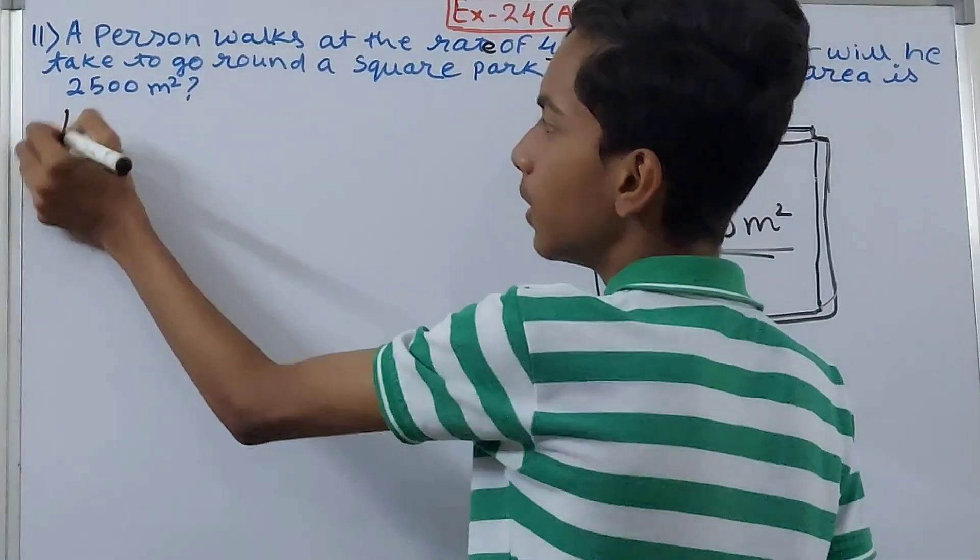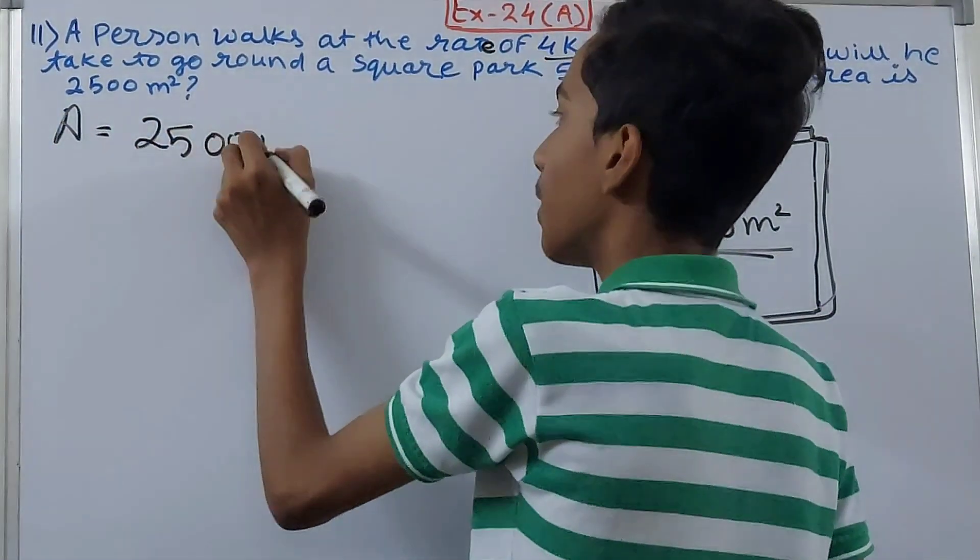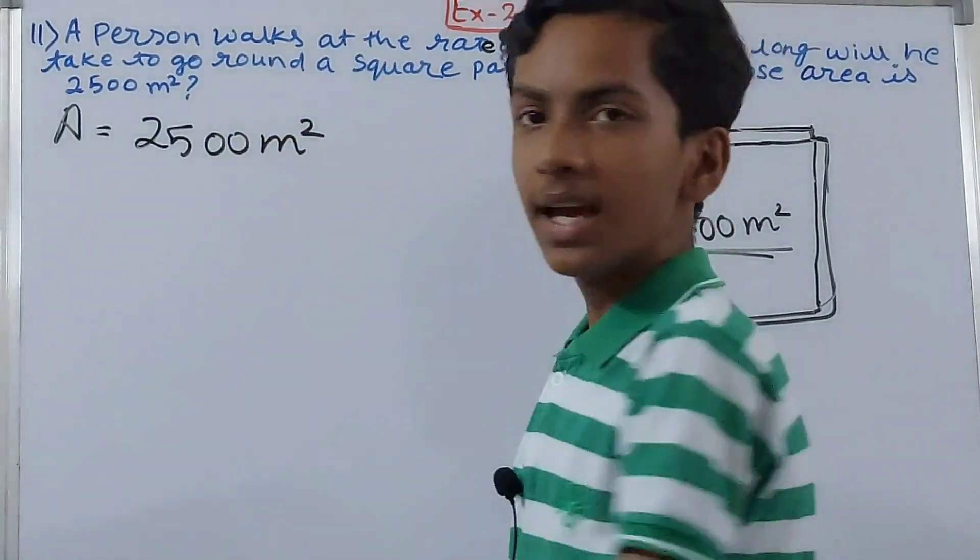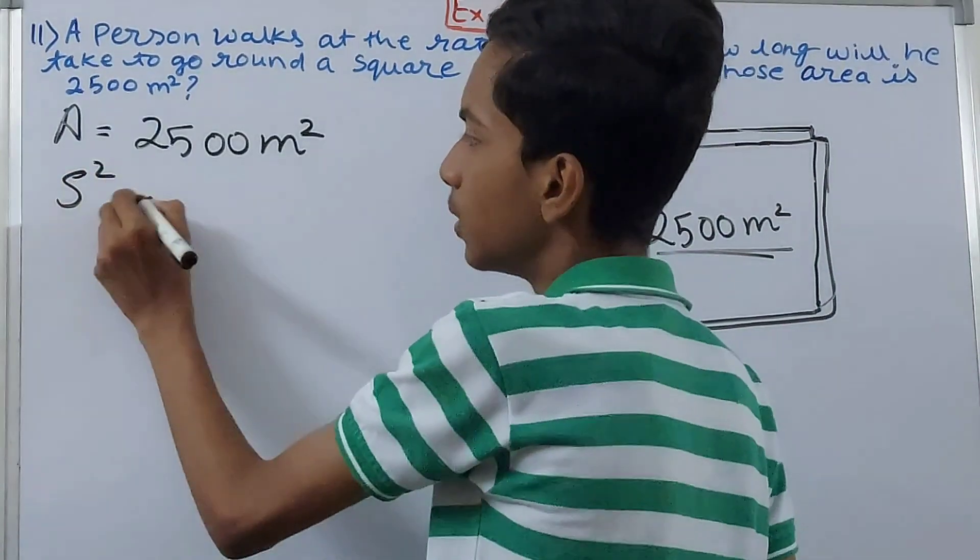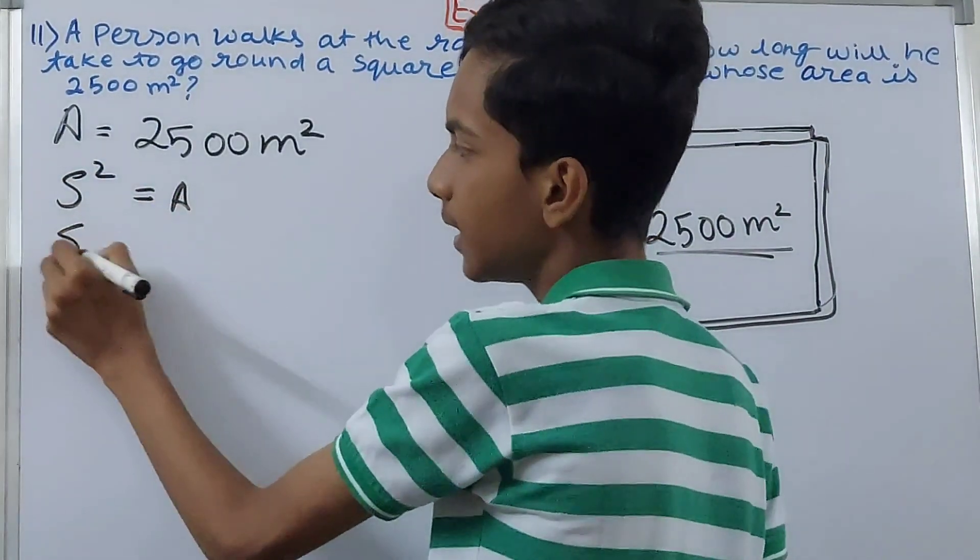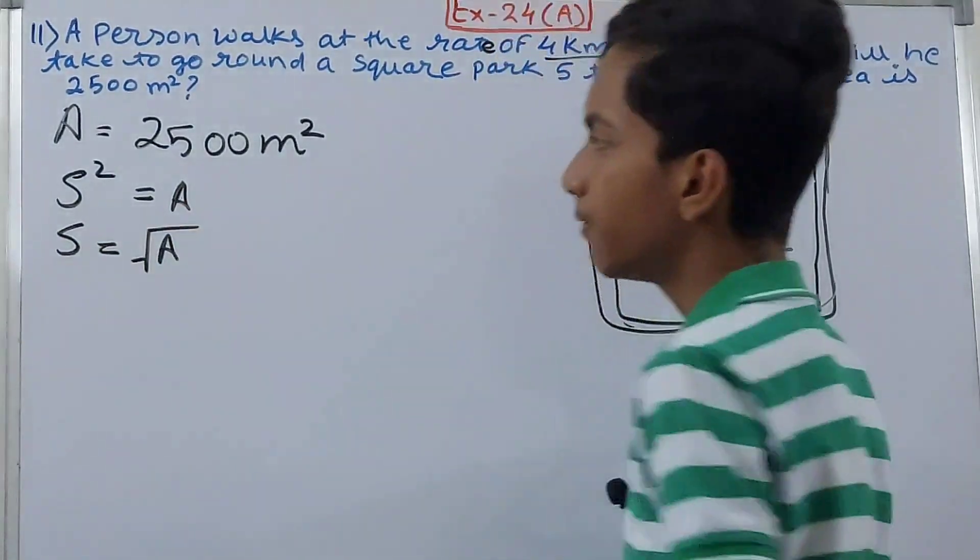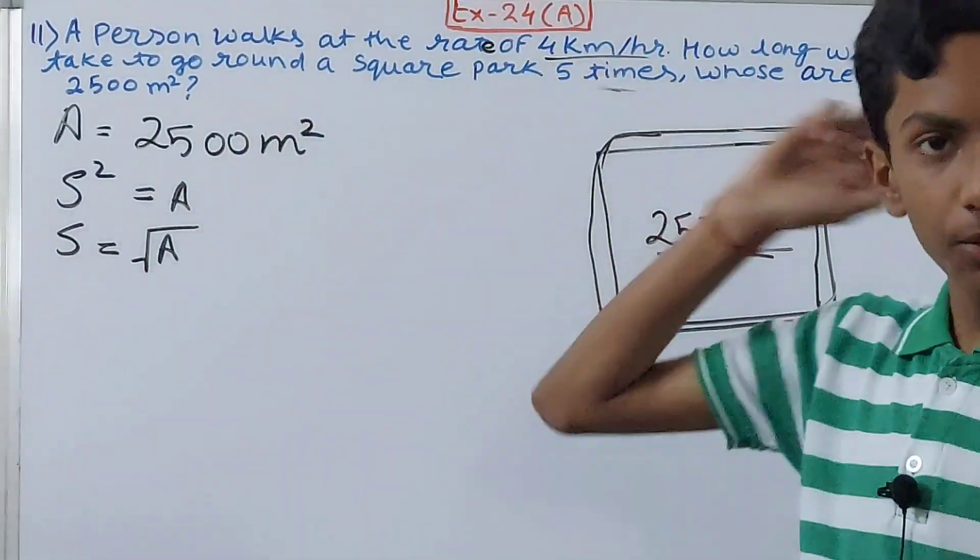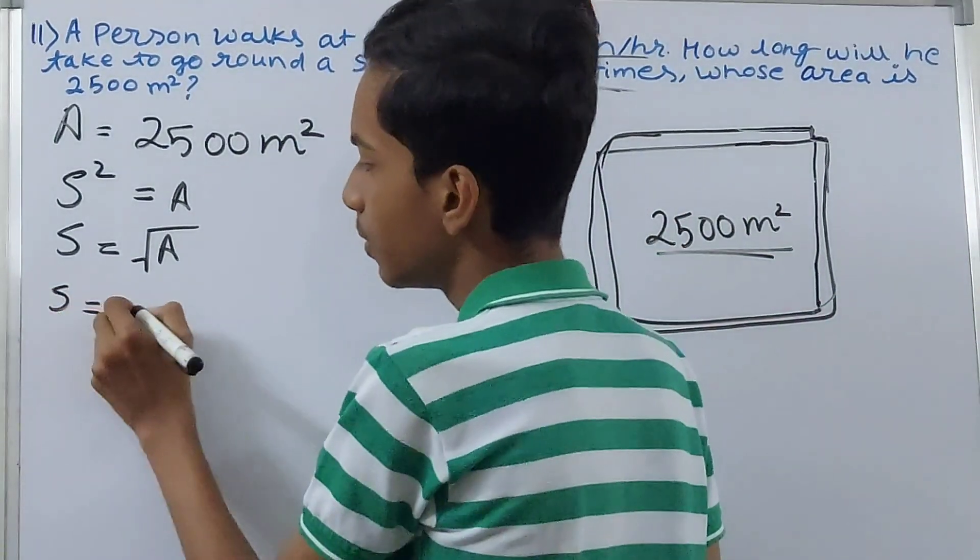First, the area given is 2500 square meters and we have to find the length of one side. We know that side squared equals the area, so side equals the square root of area. So side equals the square root of 2500.